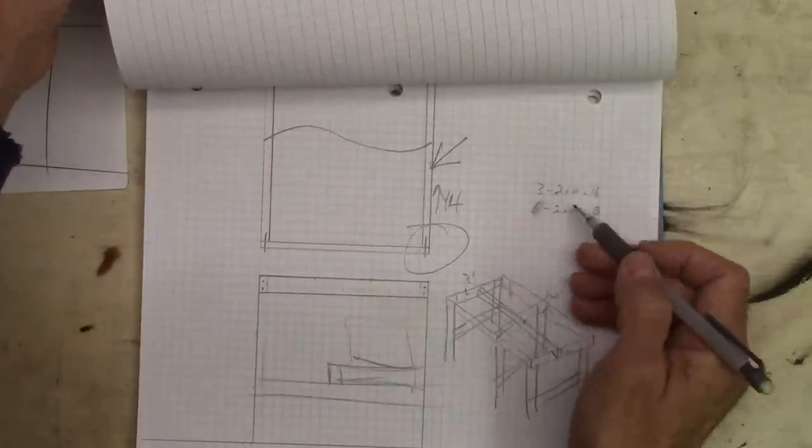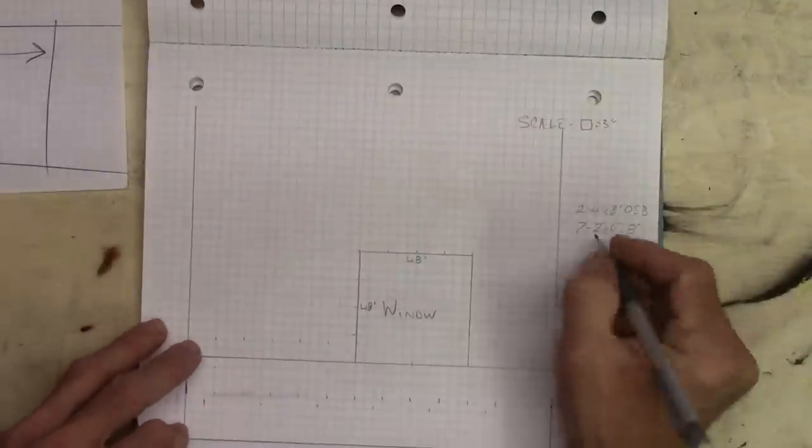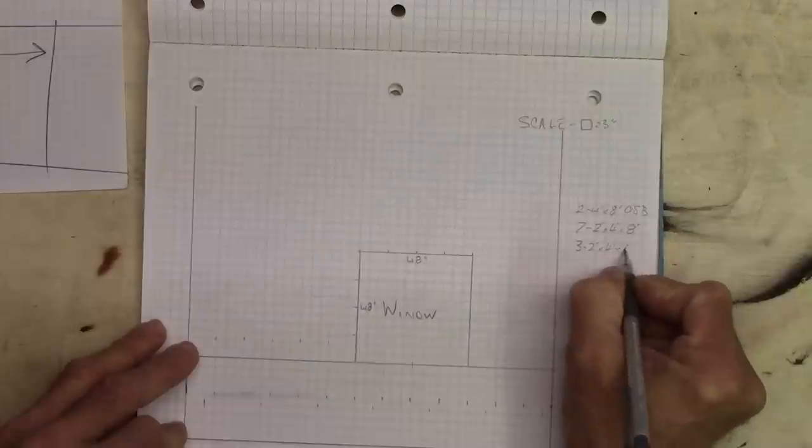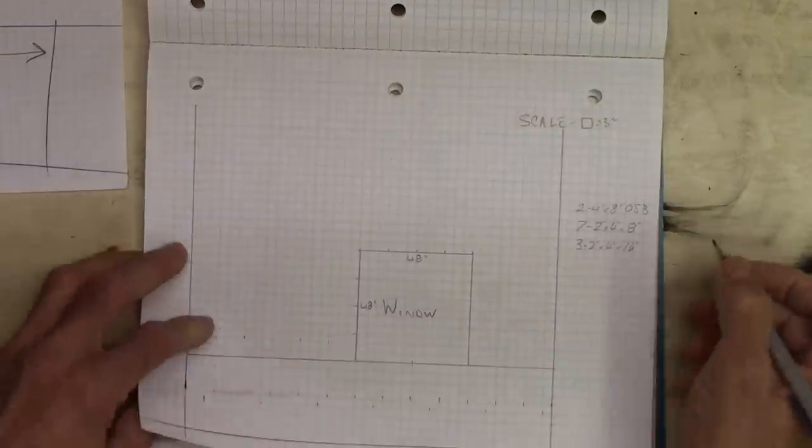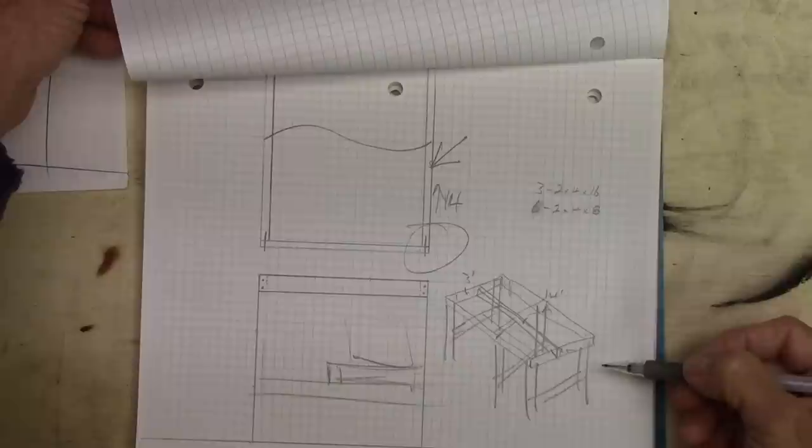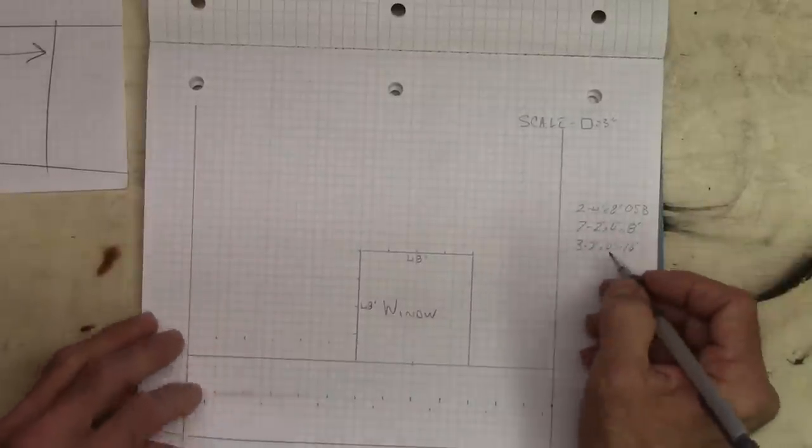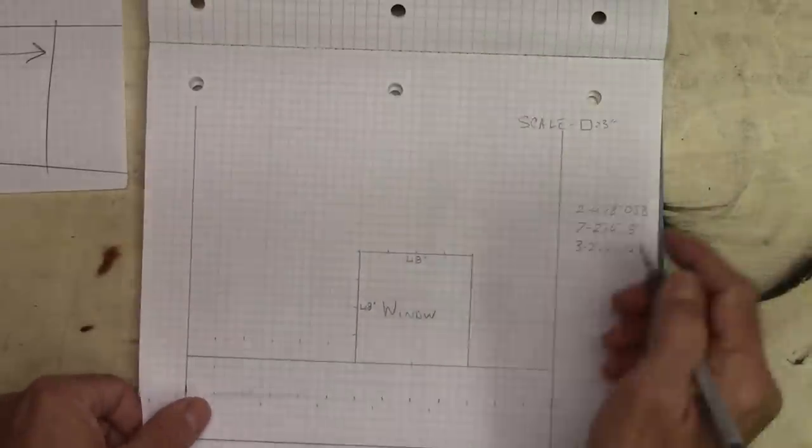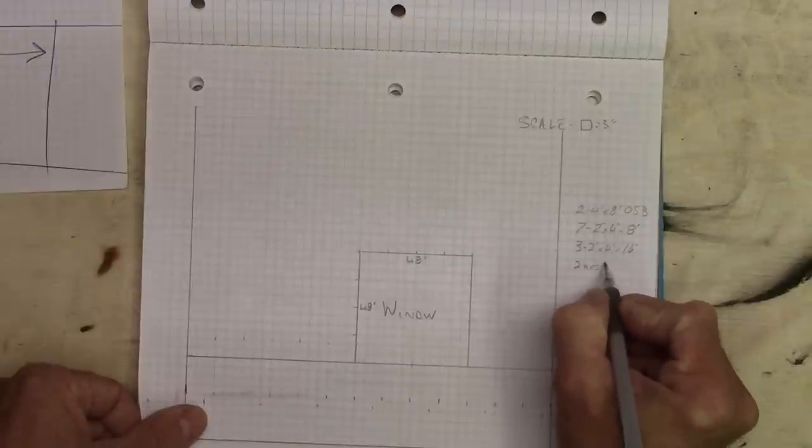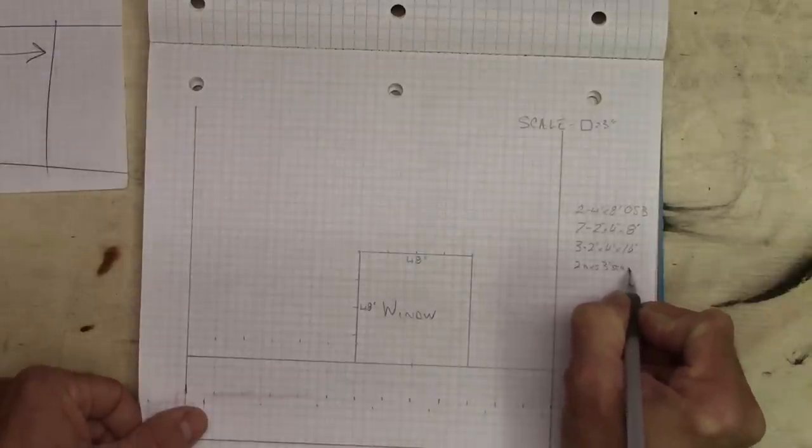And then we've got, let's see, three sixteen-footers for the top of the bench. So we'll put three, two-by-four-by-sixteen. And to put all this stuff together, we're going to need a bunch of three-inch drywall screws. So let's go ahead and put a box of those on. Maybe two boxes. That should do the trick. So two boxes, three-inch, we'll just call it screws. I know what type I'm getting.